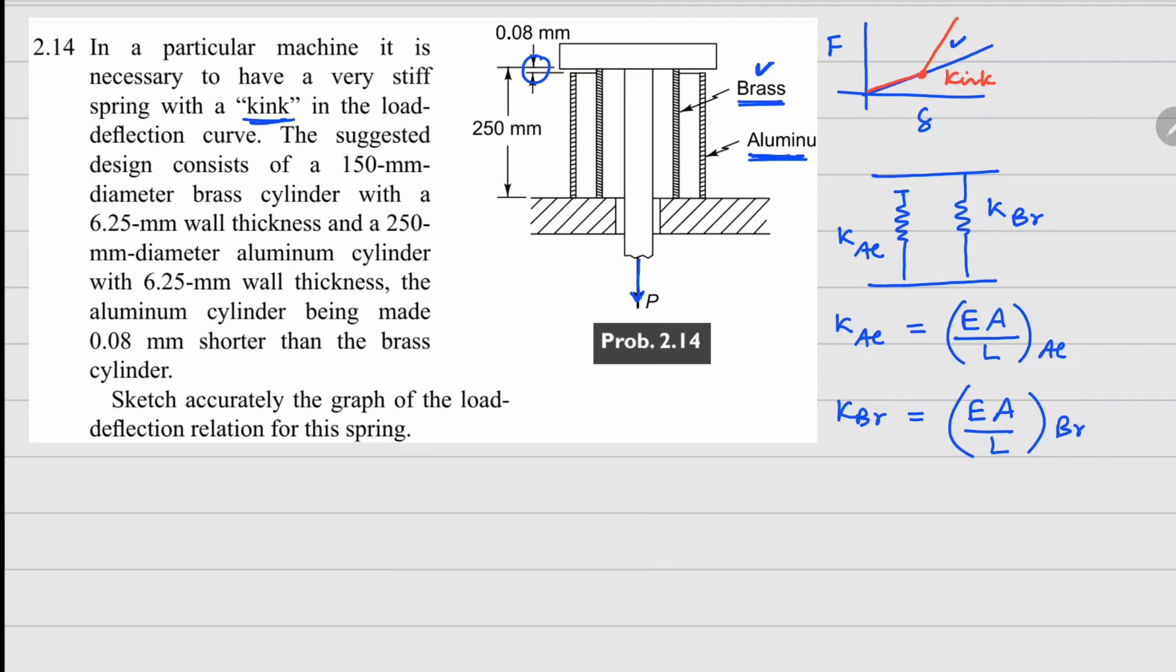So in the problem we have the area there, we have the length there. Elastic modulus we can take for aluminum as 70 GPa and for brass we can take it as 103 GPa.